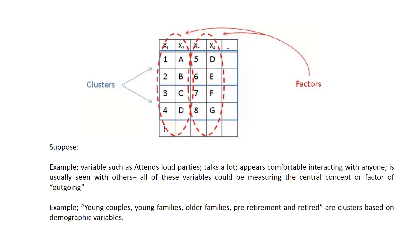This picture shows the clusters and factor analysis in rows and columns. To elaborate more, examples we discuss: variables such as attends loud parties, talks a lot, appears comfortable interacting with anyone, is usually seen with others—all of these variables could be measuring the central concept or factor of outgoing. Whereas young couples, young families, older families, pre-retirement, and retired are the clusters based on demographic variables.